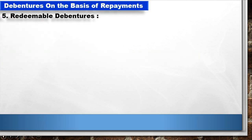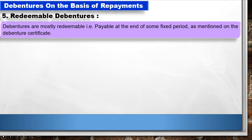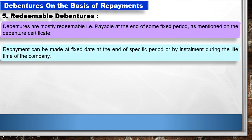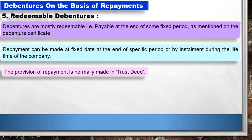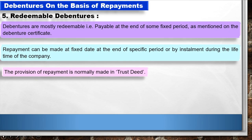Debentures on the basis of repayment. 5. Redeemable Debentures: Debentures are mostly redeemable, that is, payable at the end of some fixed period as mentioned on the debenture certificate. Repayment can be made at a fixed date, at the end of a specific period, or by installment during the lifetime of the company. The provision of repayment is normally made in the trust deed.